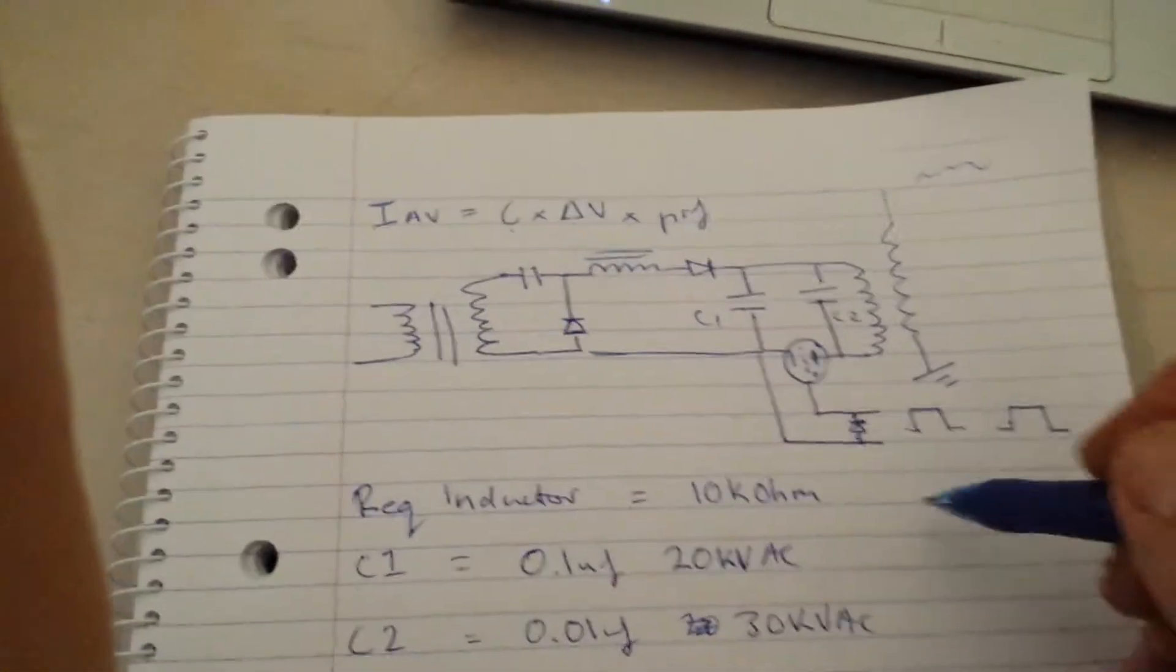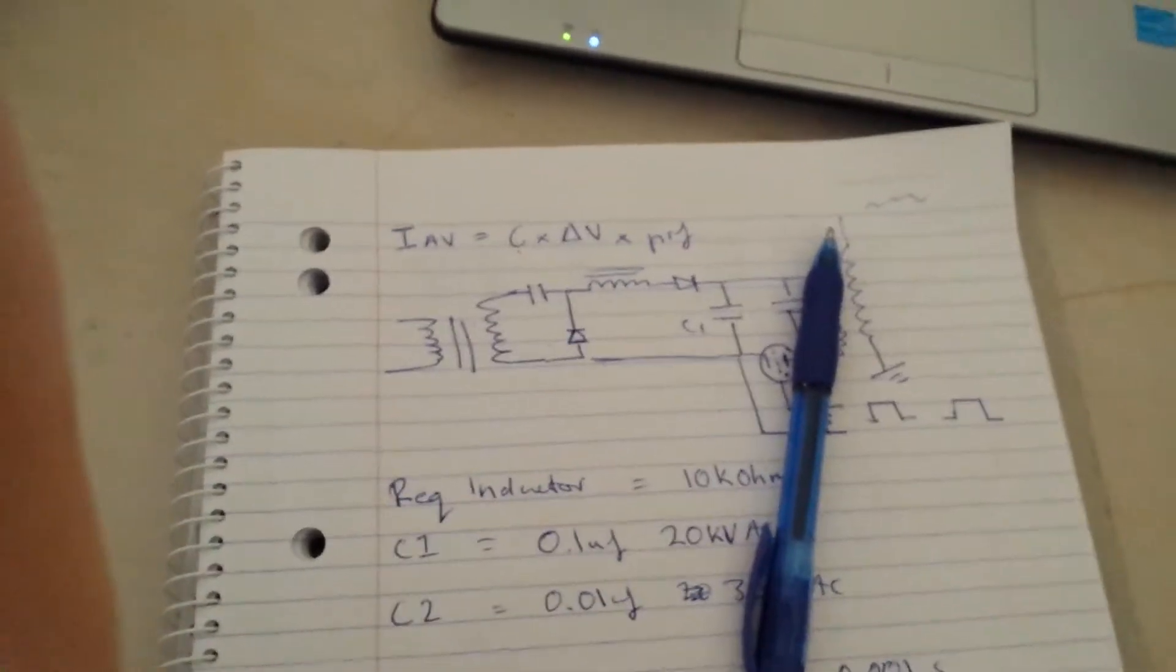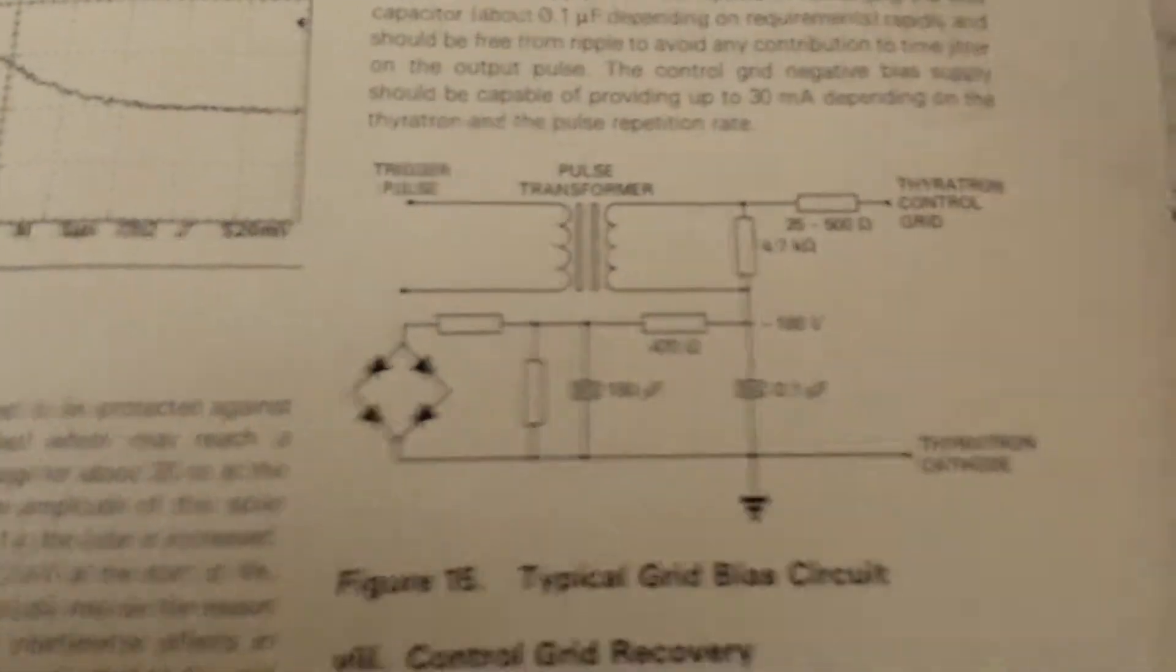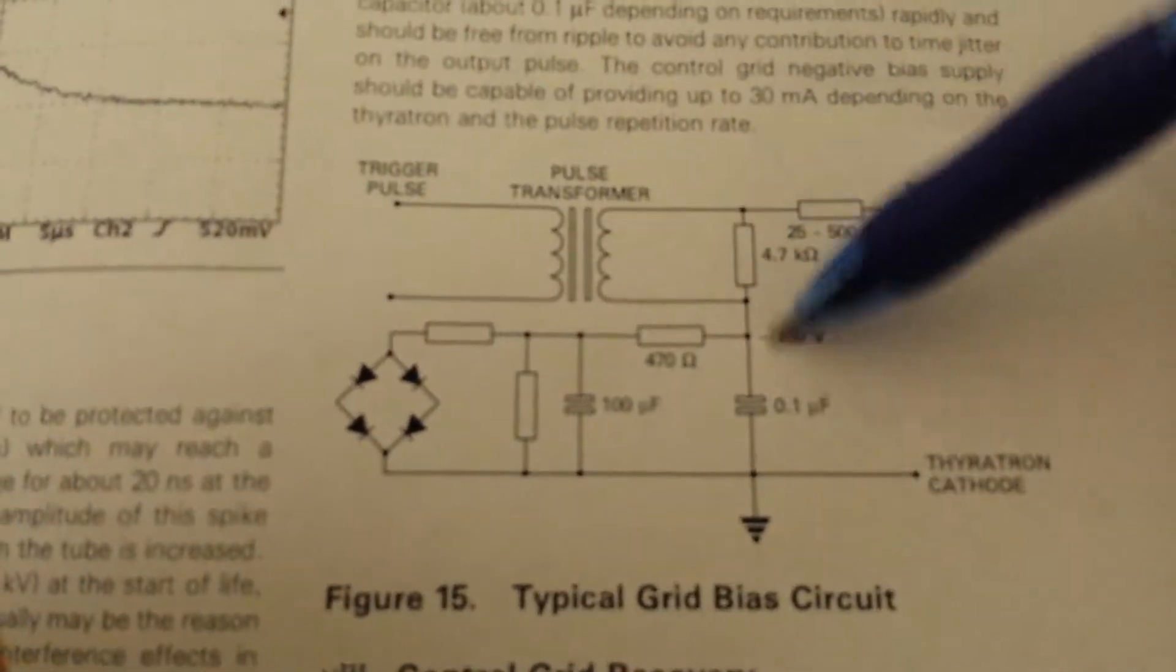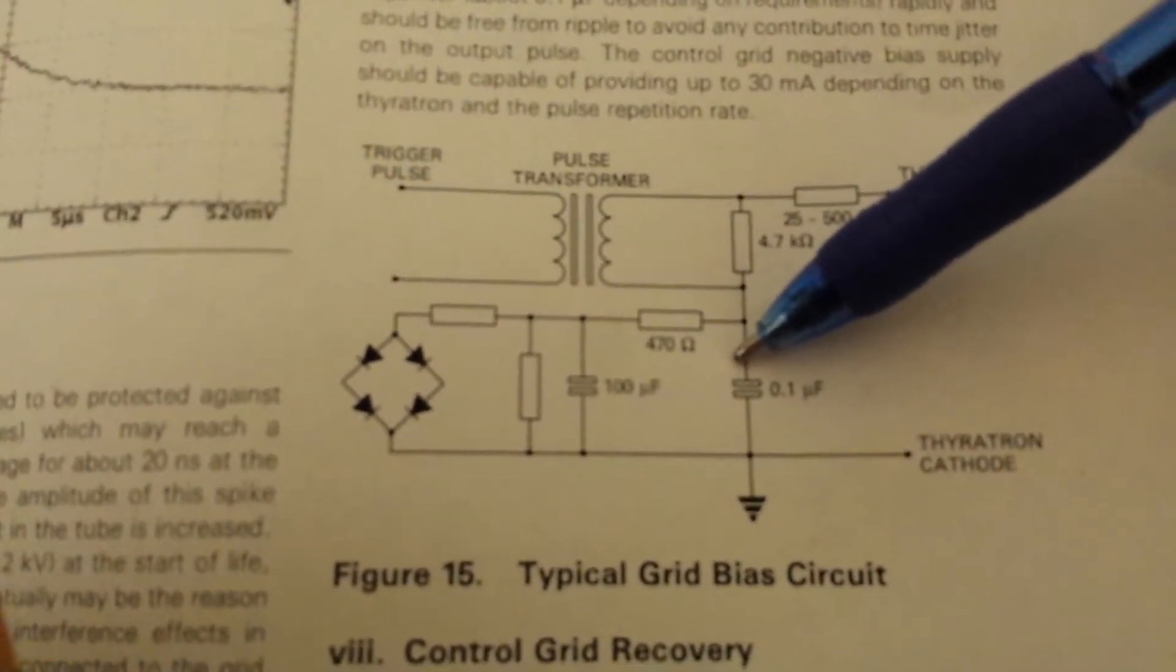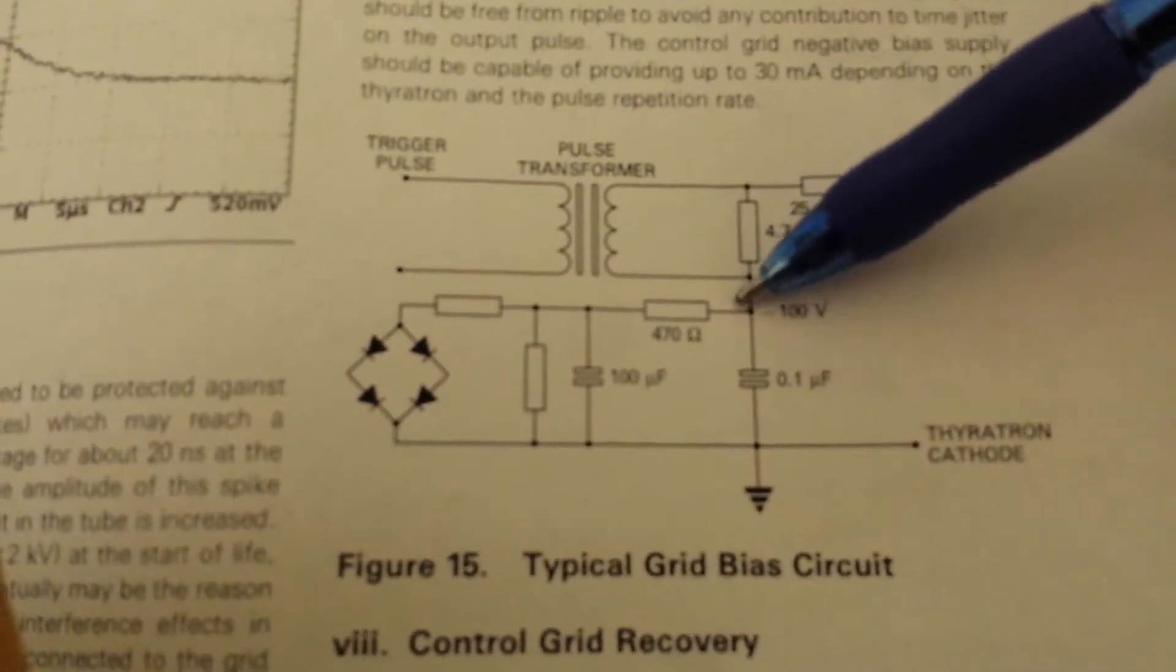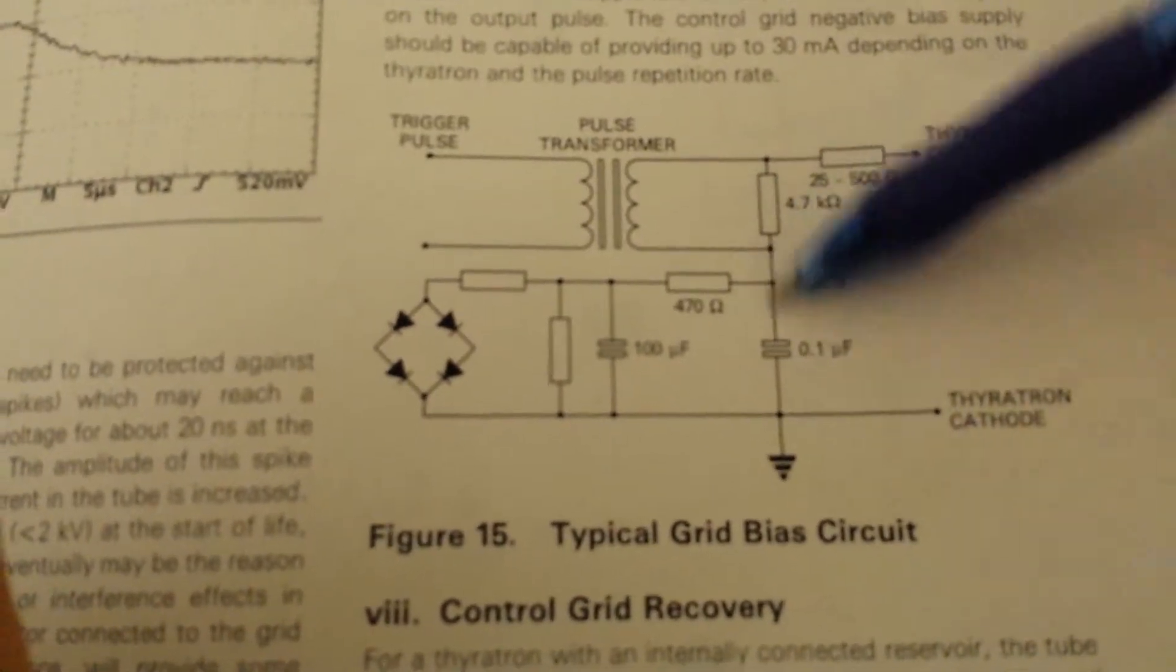In terms of the grid biasing, you can actually use this circuit here from the thyrotron preamble, and that'll make your grid negatively biased, which will stop jitter, and it'll stop premature firing.